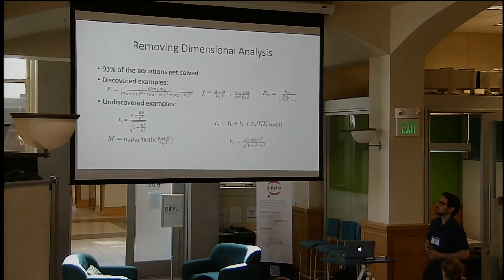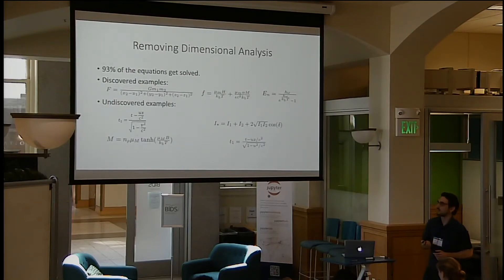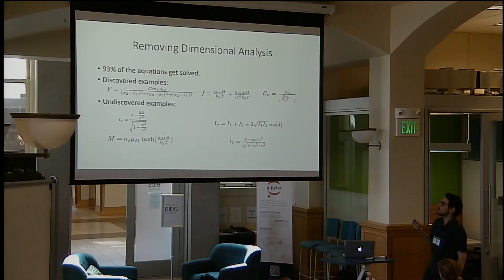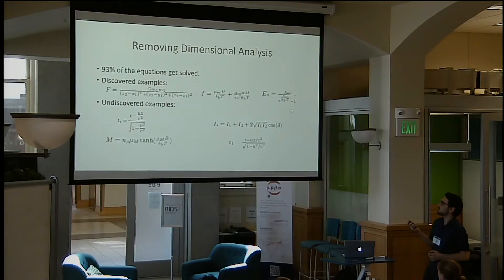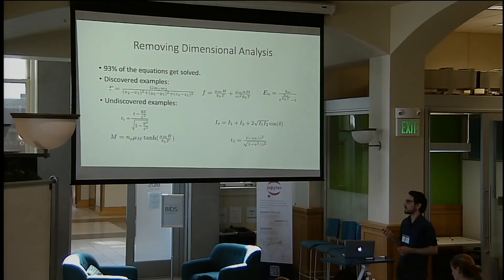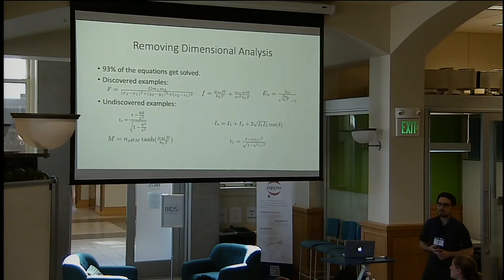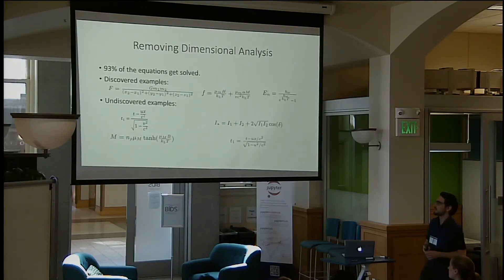We check the effect of removing dimensional analysis from our code. In that case, we are still able to solve 93% of the equations. Without dimensional analysis, the neural network becomes even more useful — for example, it can still discover that H omega always appears together, and similarly for KT, reducing a four-variable problem to a two-variable problem solvable by brute force. The equations we couldn't solve without dimensional analysis were functions that had no interesting properties such as separability or symmetry, so neither the neural network nor brute force alone could handle them in reasonable time.